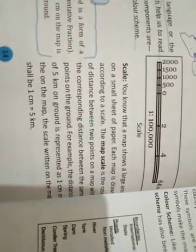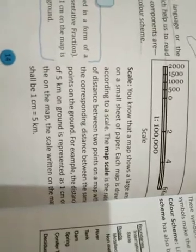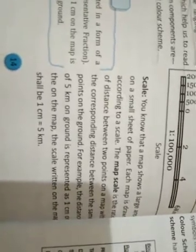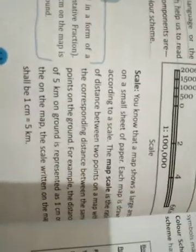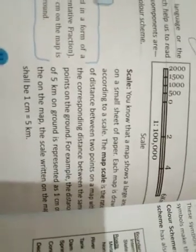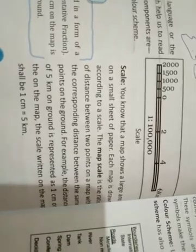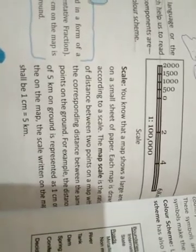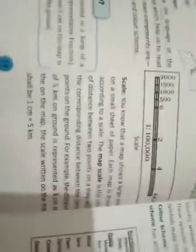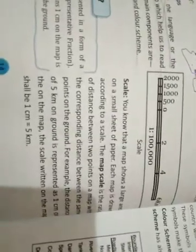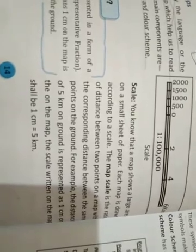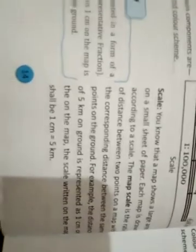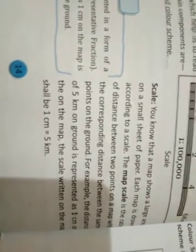Each map is based on scale. When you buy a map, the scale is shown on it. The map scale is the ratio of distance between two points on a map with the corresponding distance between the same points on the ground. Simply, the actual area is made smaller. For example, a distance of 5 km on the ground is represented as 1 cm on the map — so 1 cm equals 5 km.